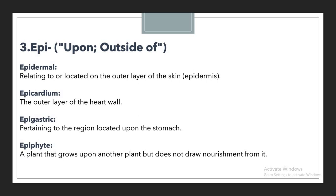The next example is epicardium. Epicardium is used to showcase the outer layer of the heart wall. We discussed endocardium earlier for the inner lining of the heart; this time we use epicardium for the outer layer of the heart wall. Again, since it relates to something outside or outer, we use the prefix EPI.